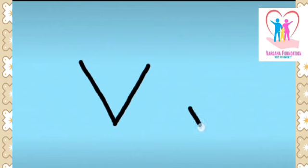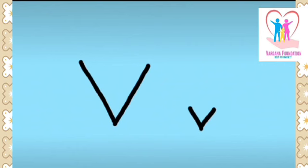In the same way, make small v where from left to right one slant line and from right to left one more slant line, and they both will meet at the bottom. And this would be said as small script letter V.